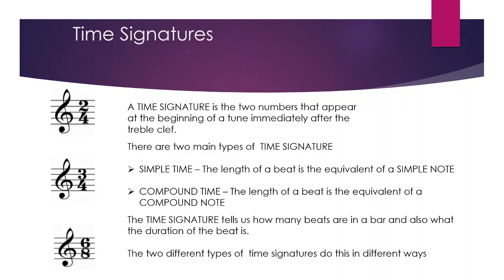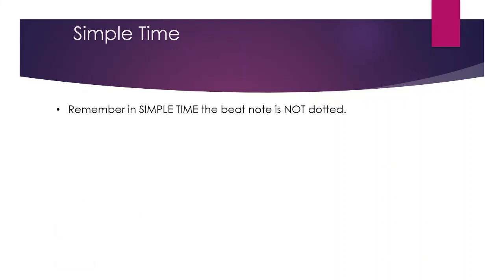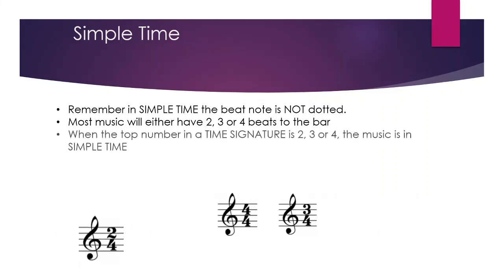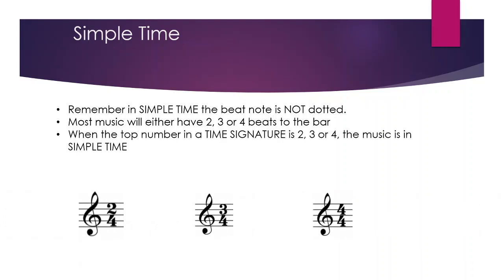In simple time, the beat note is not dotted. Most simple time signatures have either two, three, or four beats per bar — so we've got 2/4, 3/4, and 4/4. When the top number is two, three, or four, the music is in simple time. Almost all of us here have played one of each of those: we played the mass band 2/4, a 3/4 march, and Scotland the Brave which is 4/4.